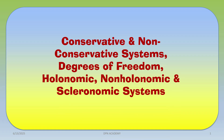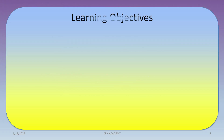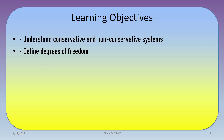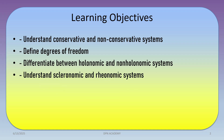In this class we have to discuss classical mechanics — conservative and non-conservative systems, degree of freedom, holonomic and non-holonomic systems, and scleronomic and rheonomic systems. Our learning objectives today are to understand conservative and non-conservative systems, how to define degree of freedom, the difference between holonomic and non-holonomic systems, what is meant by scleronomic and rheonomic systems, and some examples and implications.